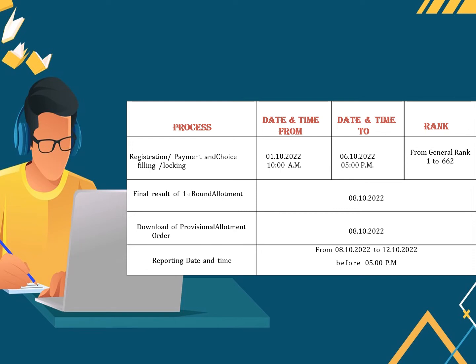The final result of the first round will be announced on 8th October, and you need to download the provisional allotment order on 8th October. The reporting date and time to the allotted college is from 8th October to 12th October before 5 p.m.